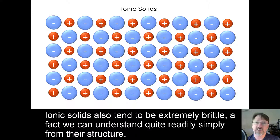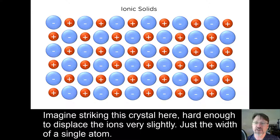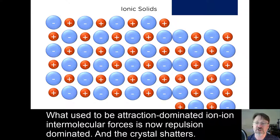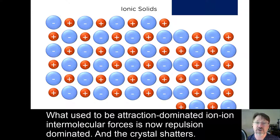Ionic solids also tend to be extremely brittle, a fact we can understand quite readily simply from their structure. Imagine striking this crystal here, hard enough to displace the ions very slightly, just the width of a single atom. What used to be attraction-dominated ion-ion intermolecular forces is now repulsion-dominated, and the crystal shatters.